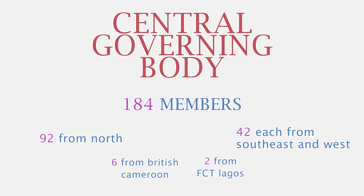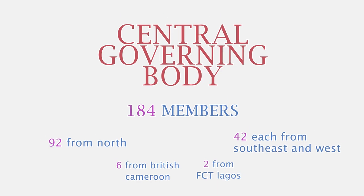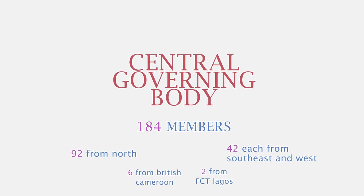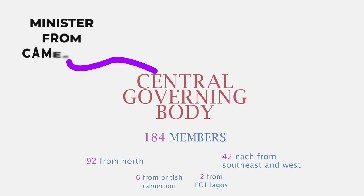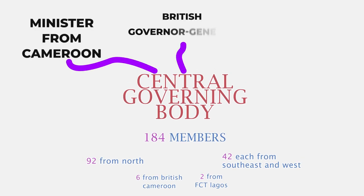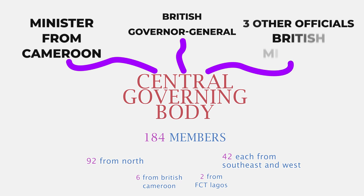The executive council of the central body would be made up of three ministers from each region appointed by the party leaders, one minister from Cameroon, the British governor general, and three other official British ministers.